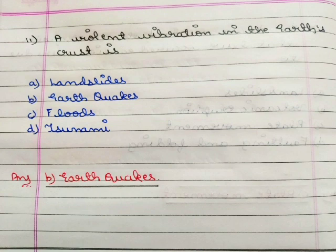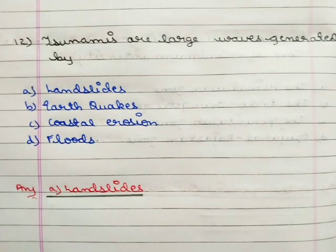Next question: violent vibration in the earth's crust is called option A landslides, option B earthquakes, option C floods, option D tsunami. The correct answer is option B earthquakes.